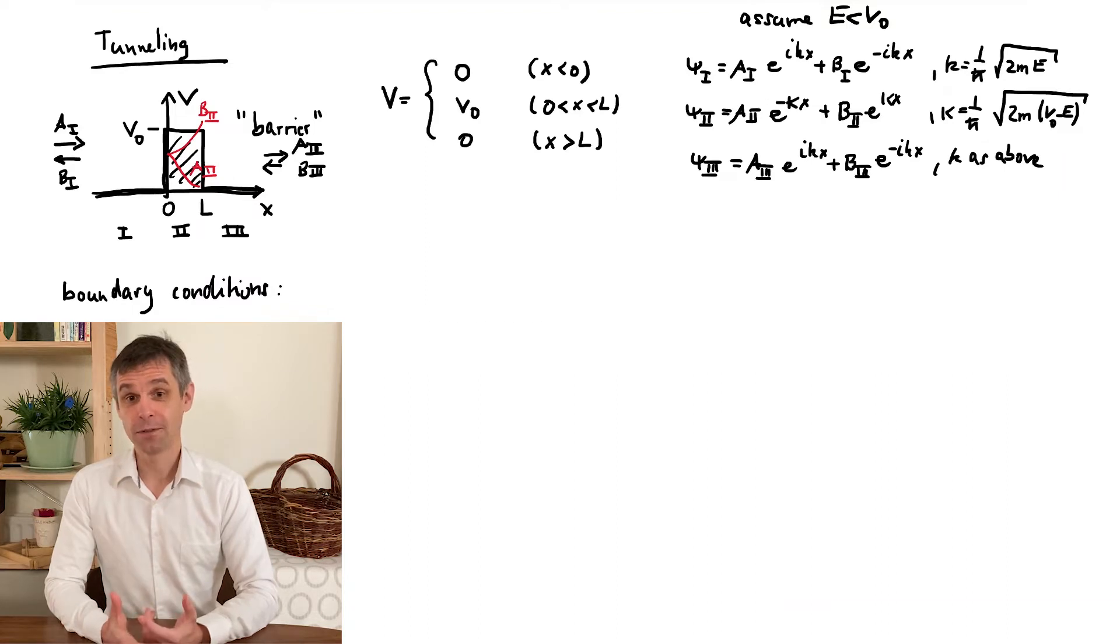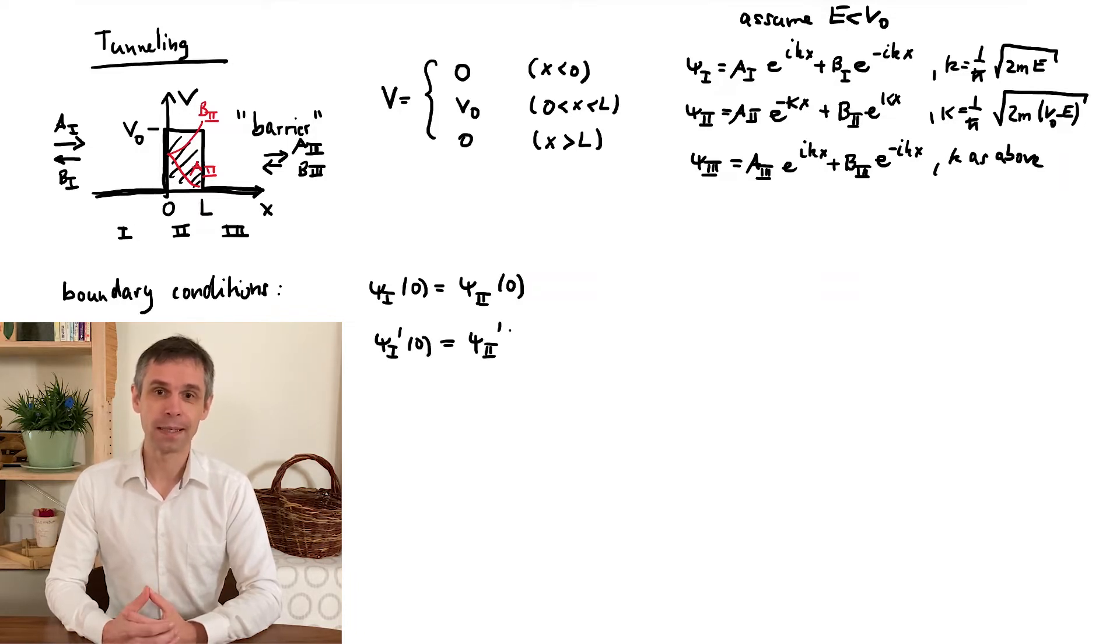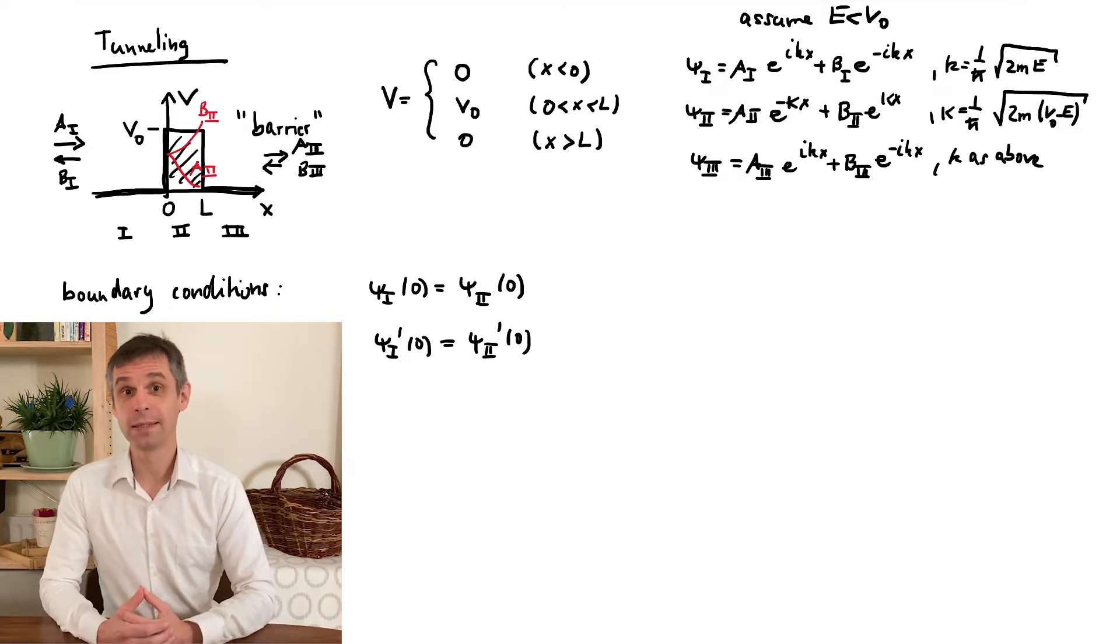At the first interface, this just looks like for the soft wall, including both coefficients of the exponentials in the barrier, which are multiplied by the imaginary part kappa of the wave number when we look at the derivative.